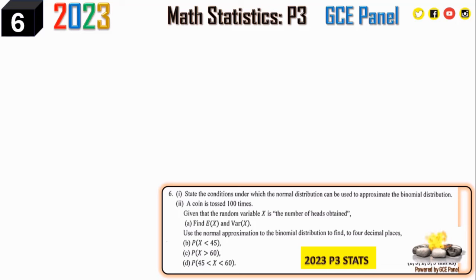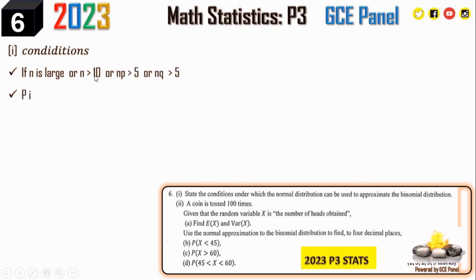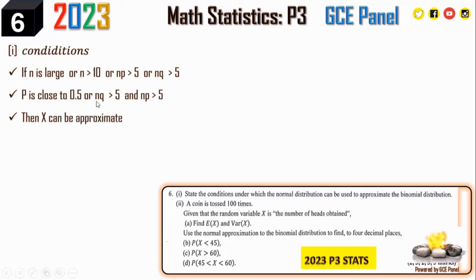Conditions for approximating binomial by normal: n is large (n > 10, or np > 5 and nq > 5), and p is close to 0.5. If these conditions hold, the binomial can be approximated using the normal distribution.